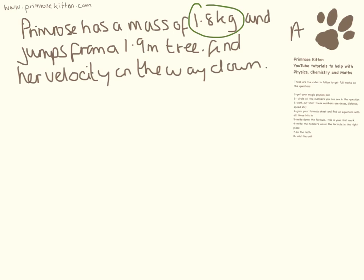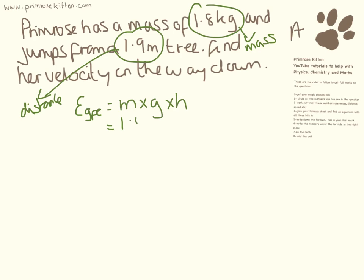So Primrose has a mass of 1.8 kilograms and jumps from 1.9 meter tree. Find her velocity on the way down. So this again, we're moving to some really tricky questions here. And you need to combine two equations to find this. So this is her mass. And this here is the distance. So the first thing we need to do is find her gravitational potential energy. And that is mass times gravity times height. So 1.8 times 10 times 1.9 equals 34.2 joules. So now we know how much gravitational potential energy she had at the top and on her way down.